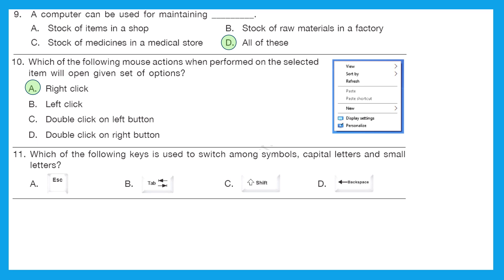Question 11: which of the following keys is used to switch among symbols, capital letters and small letters? Is it escape? Is it tab? Is it shift or backspace? The right answer is option C, shift. So when we press shift key, we can switch among symbols, capital letters and small letters.